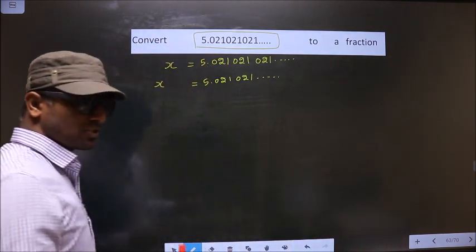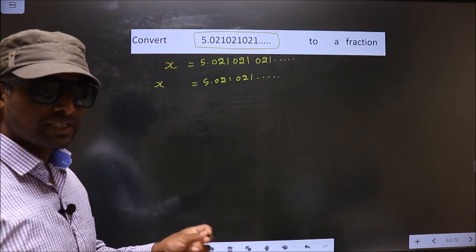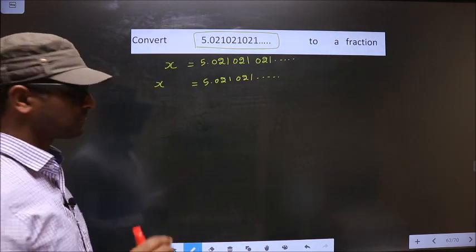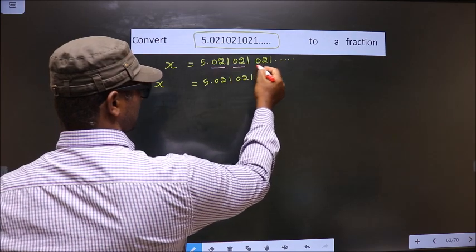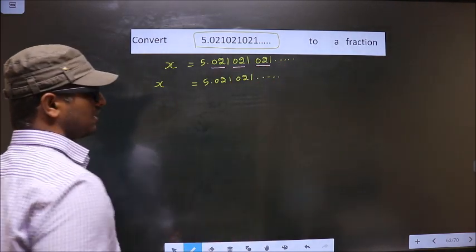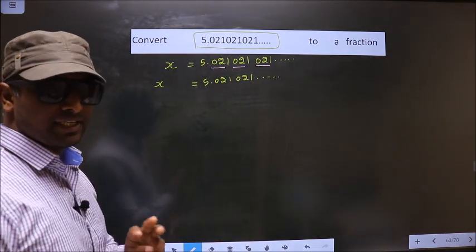Now you should check how many numbers are being repeated. Here 021, 021, 021, and so on. Three numbers are being repeated.